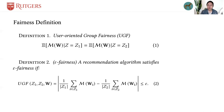Group fairness requires that the protected groups should be treated similarly to the advantaged group. In this paper, we consider grouping users into two groups according to their different activity levels.